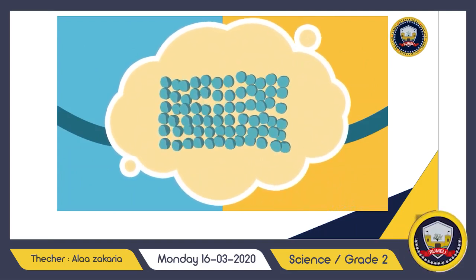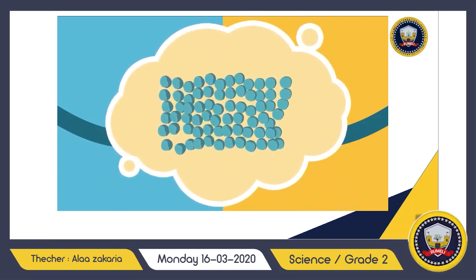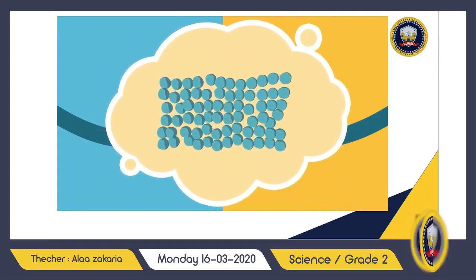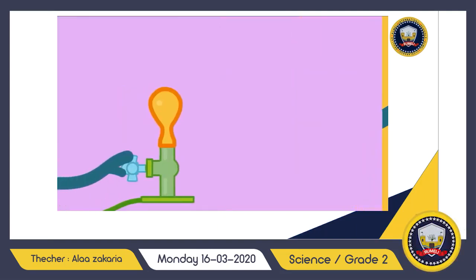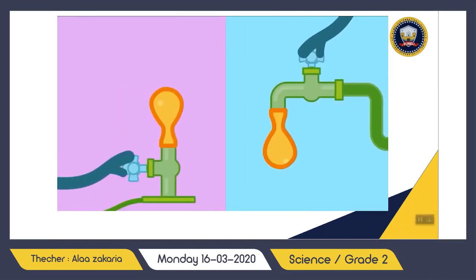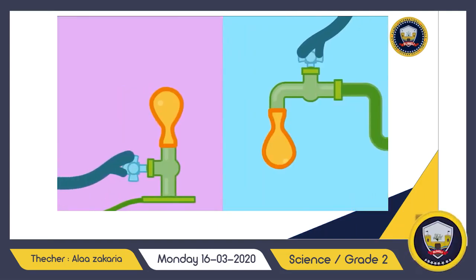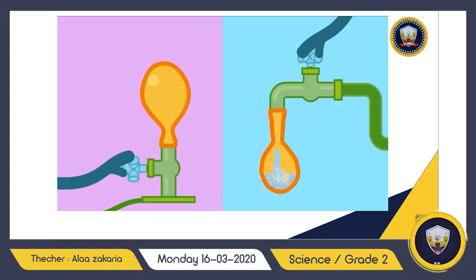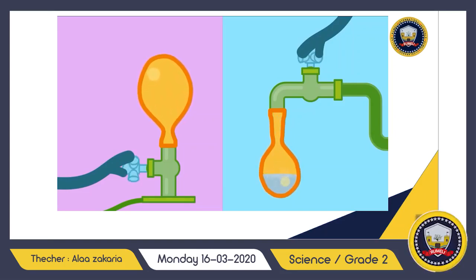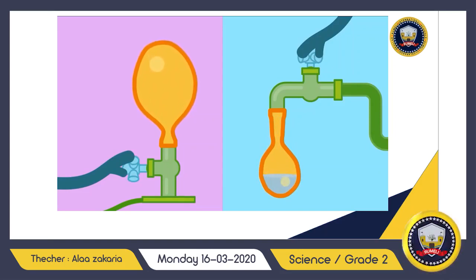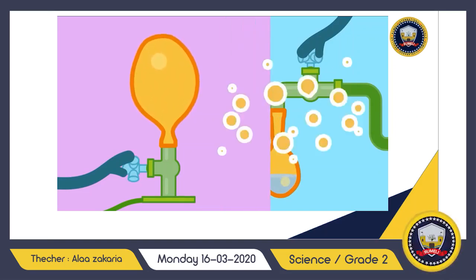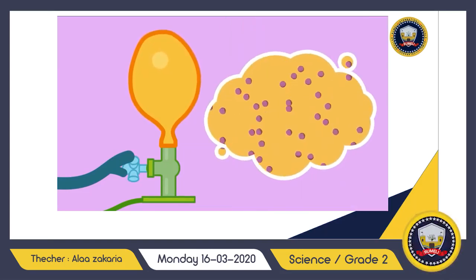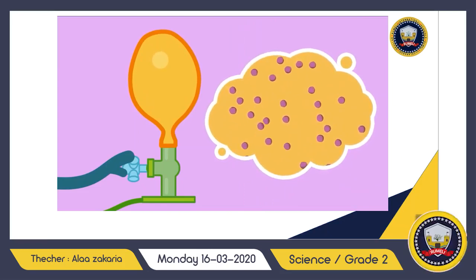Atoms in a liquid can move around but they'll stay together. A gas, like a liquid, takes the shape of the container it's in, but will also spread out to fill the entire container. When a balloon fills with water, the water fills up the bottom first, but when you fill it with gas, the gas fills the whole balloon.